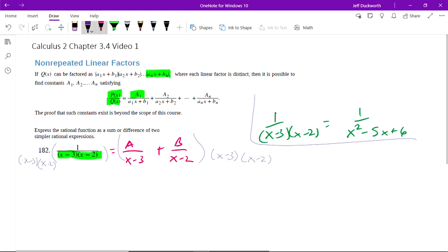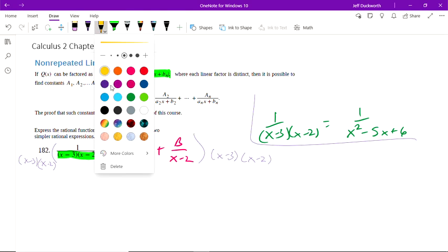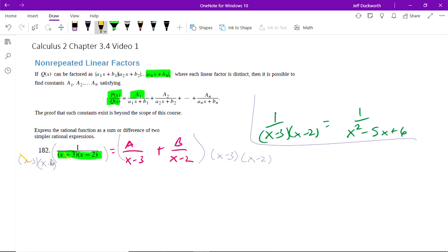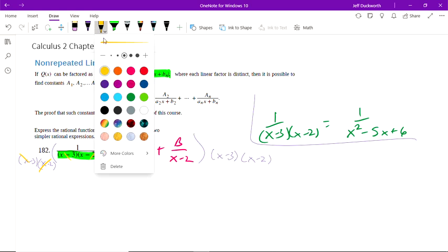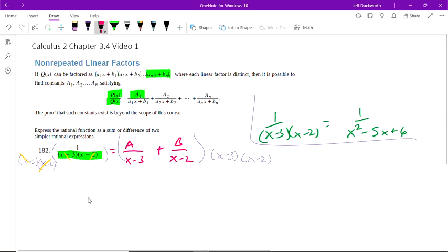Well, what I get are some cancellations, certainly. This cancels with this. This cancels with this. So I'm left with just the number 1 on the left. Okay, 1 over 1 is 1. It doesn't turn into 1 over 0 or anything like that. We're canceling. We're left with 1 in the denominator.